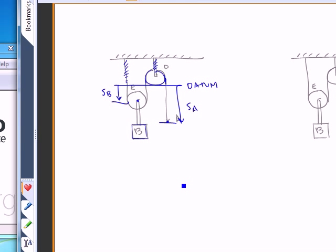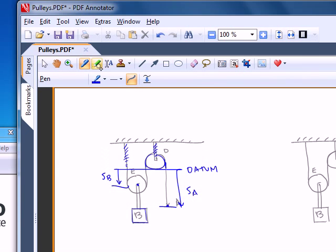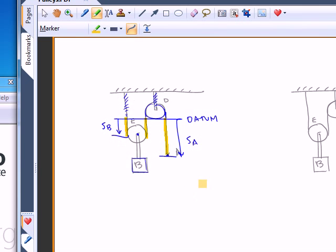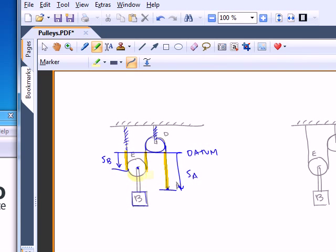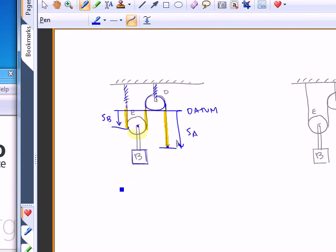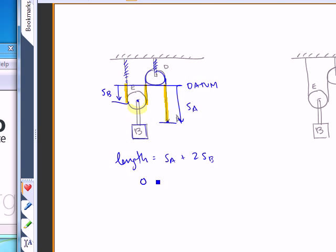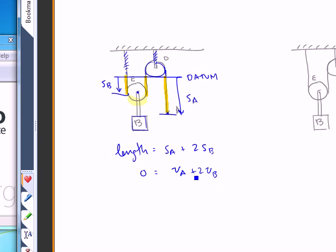And now I want the length of the cable. The length of the cable has three parts. There is an SA, there is an SB, and there's another SB, plus a little constant arc here, but we're not going to worry about that. So the length is equal to SA plus two SBs, and when you differentiate that with respect to time, the length stays constant and zero is equal to VA plus two VB, and zero is also equal to acceleration of A plus two acceleration of B.